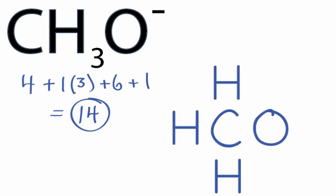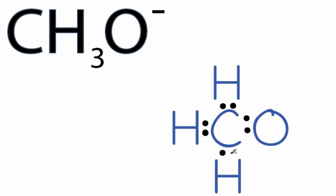We have a total of 14 valence electrons for the CH3O- Lewis structure. We'll put two between atoms to form chemical bonds. We've used eight valence electrons, and then we'll go around the oxygen. So we have 8, 10, 12, and 14 valence electrons. We've used all 14 valence electrons.